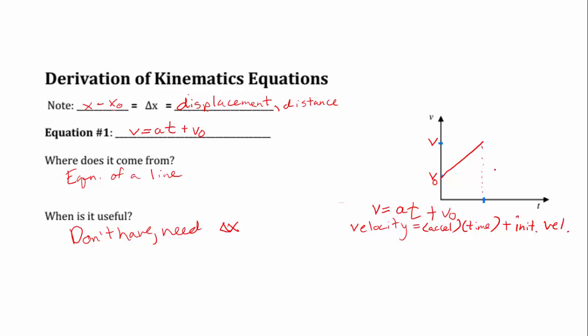So that's the first guy. And the second equation is going to come from the same sort of graph, but we're going to go kind of in the opposite direction. Remember, slope in a velocity time graph is our acceleration, but displacement is the area underneath this guy. So let's exploit that to get another equation.